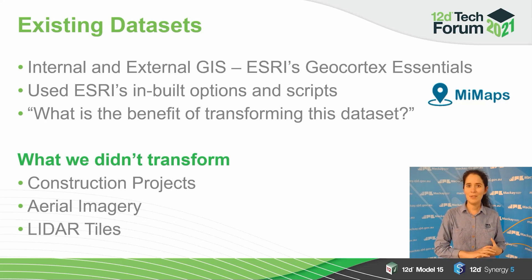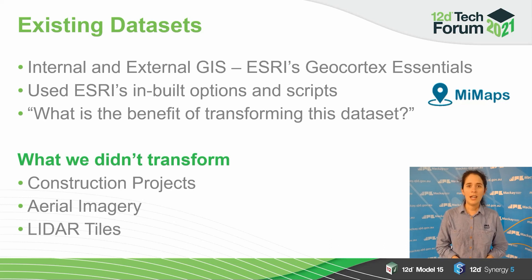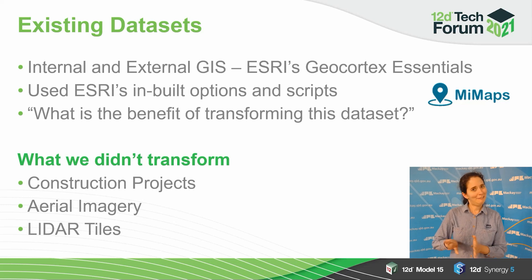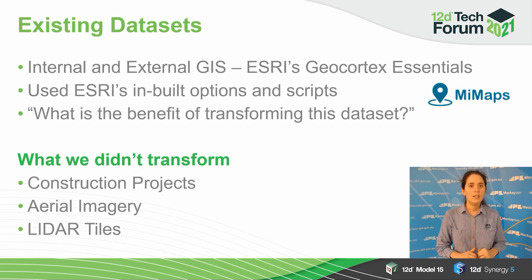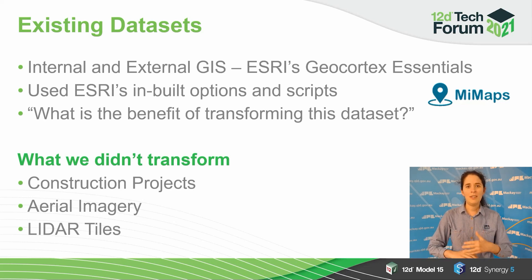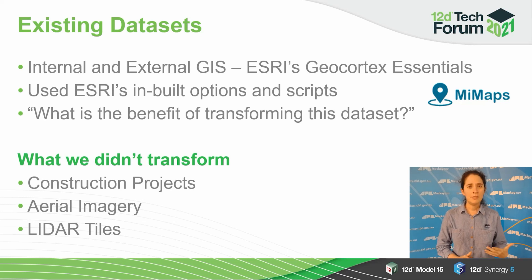While the communication side was happening, we were also looking at updating our datasets. The highest priority was our GIS datasets. We were lucky with our GIS team leader, who had gone through a similar process when Australia moved from AGD66 to GDA94, so he knew what he was doing. Our internal and external GIS run on the same platform and refer to the same datasets, so our GIS team used Esri's built-in transformation options and wrote a lot of scripts to transform our datasets and swap them in without breaking any links.